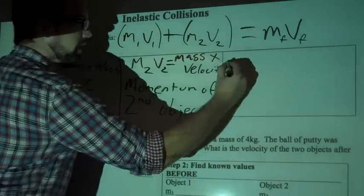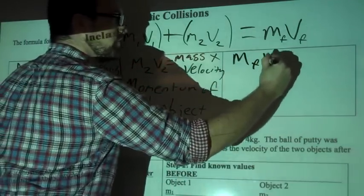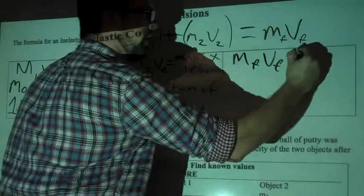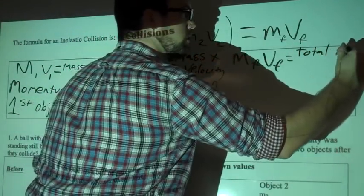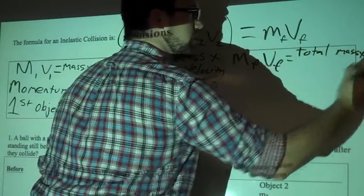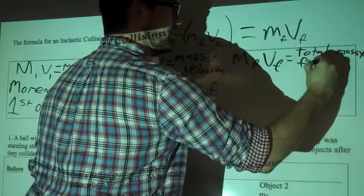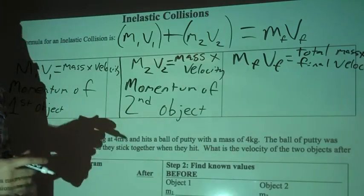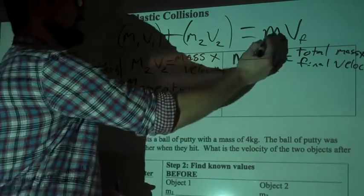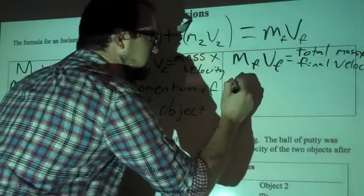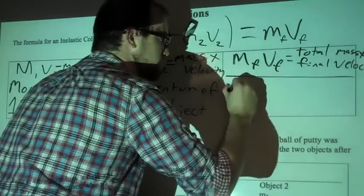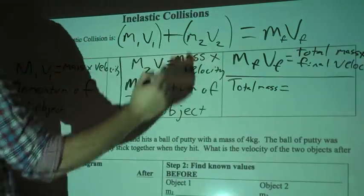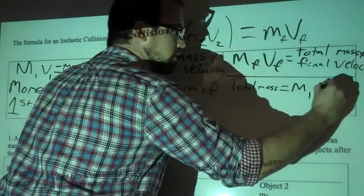So then we have mf and vf, and that's the total mass times final velocity. The total mass, and I'm going to draw a line underneath this, is m1 plus m2.